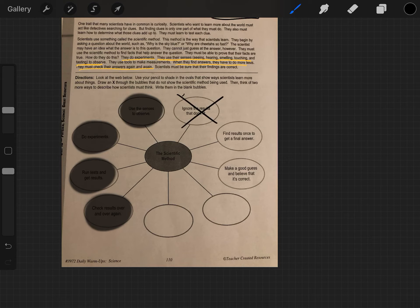Okay, find results once to get a final answer. No! Experiments must be repeatable and the scientists must check their answers again and again. That's why that sentence is already highlighted.